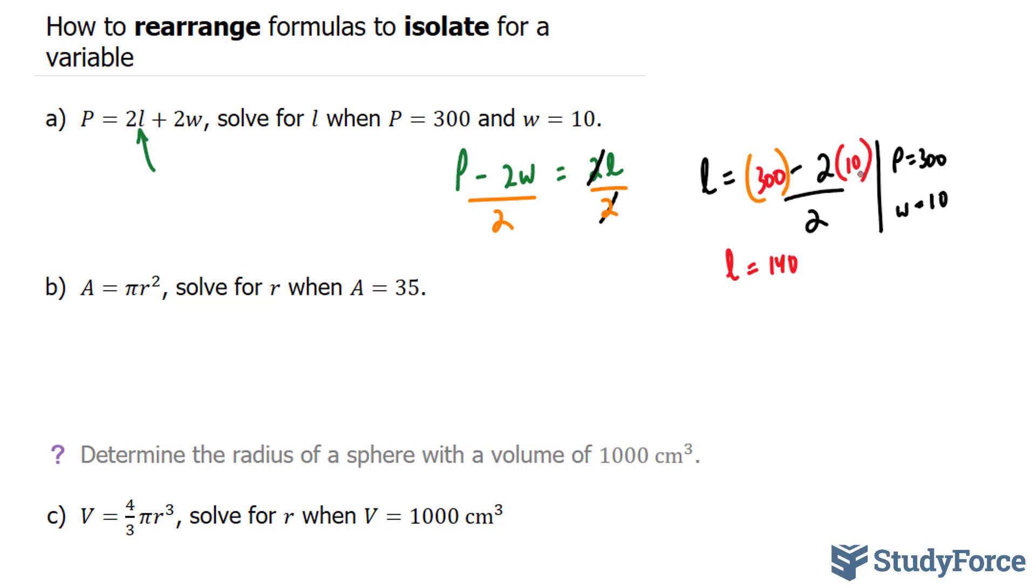Let's try B. Here we're asked to solve for R when A is equal to 35 for the formula A is equal to pi R squared, which is the area of a circle. We'll first get rid of this pi by dividing both sides by pi.